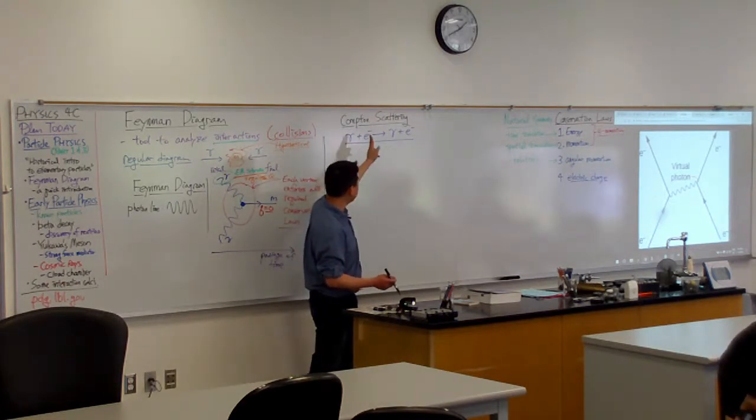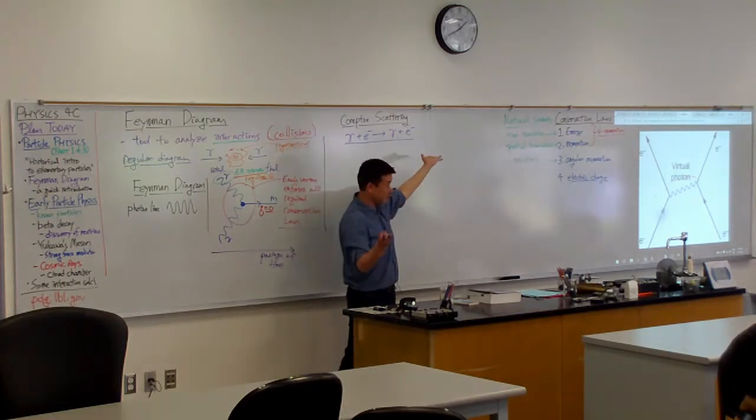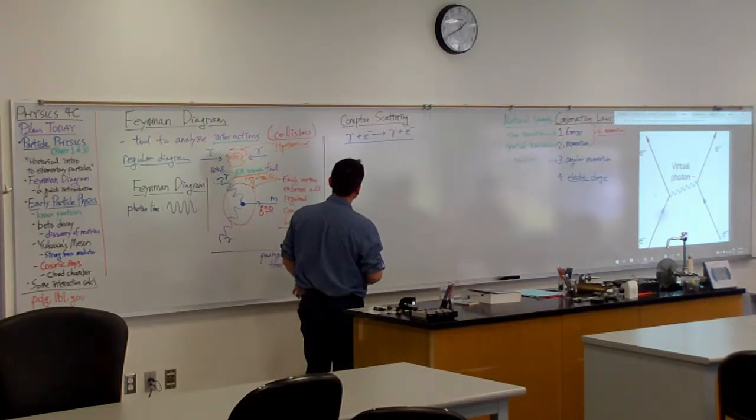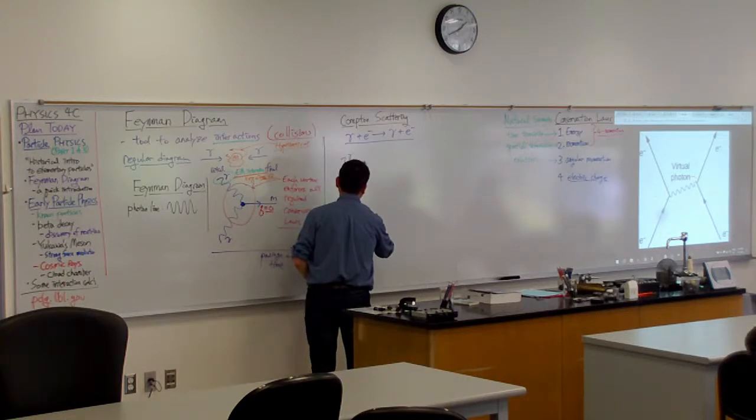You can look at your initial state and your final state. Do I have a photon and an electron coming in? And do I have a photon and an electron going out? So let me just draw the photon coming in.